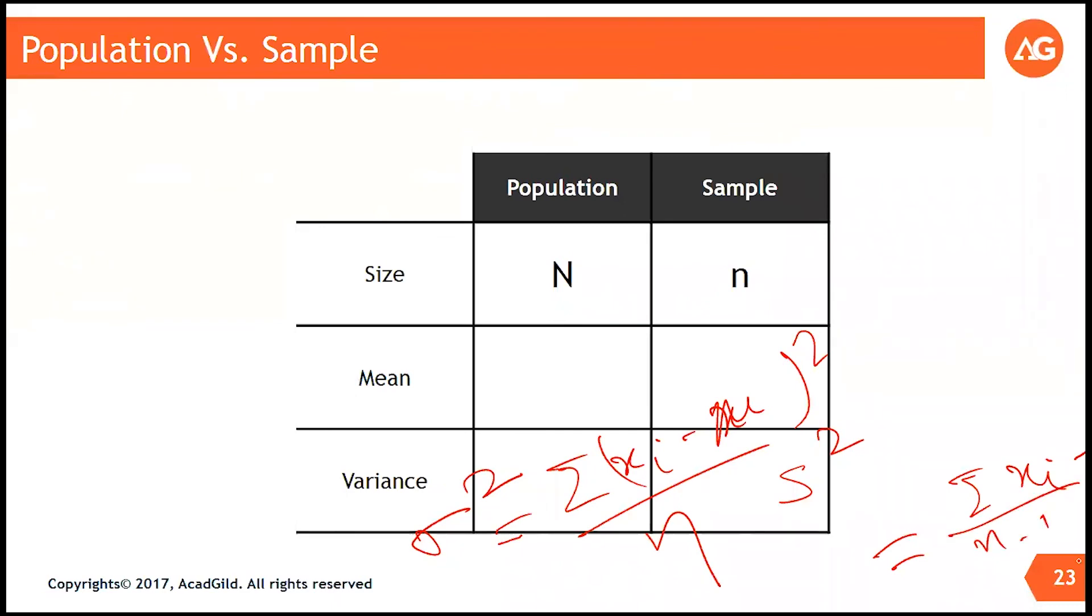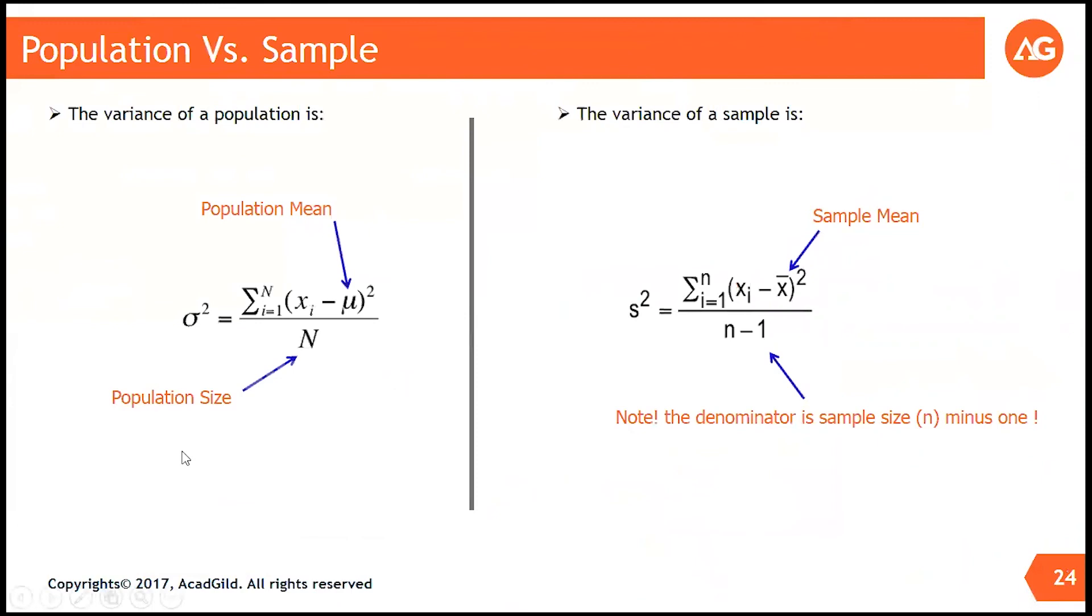And it is not difficult to figure out that the population standard deviation is written as sigma. The sample standard deviation is written as s. Population variance is denoted as sigma square. Population mean is mu and the population size is capital N.